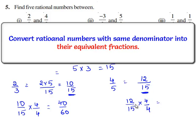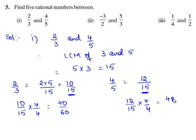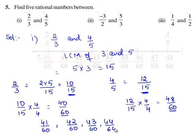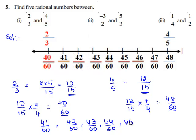Now we shall write 5 rational numbers between 40/60 and 48/60. Therefore, the 5 rational numbers are: 41/60, 42/60, 43/60, 44/60, and 45/60.